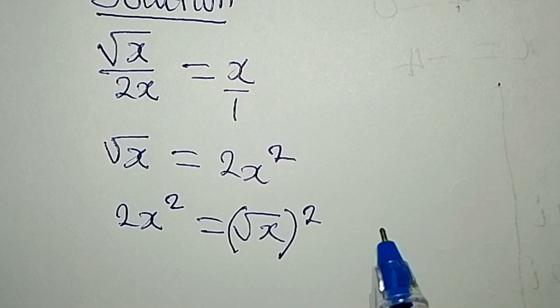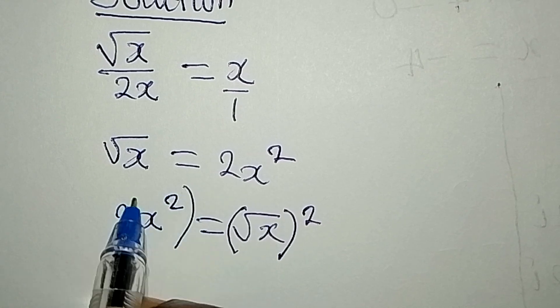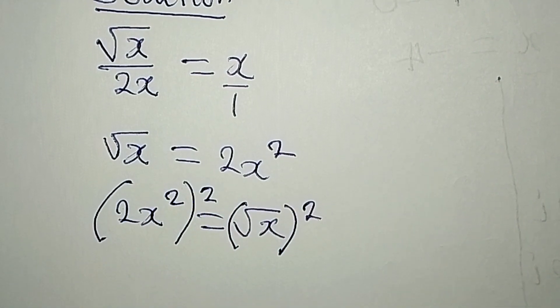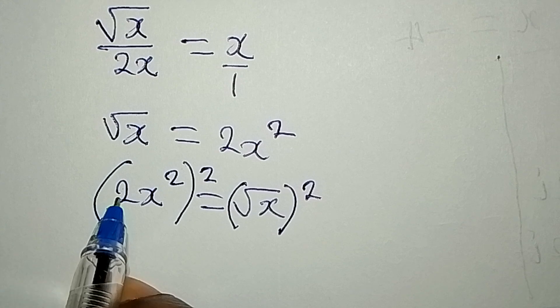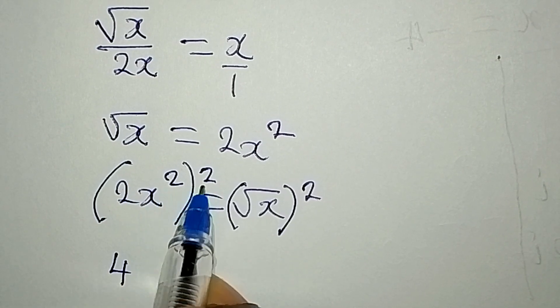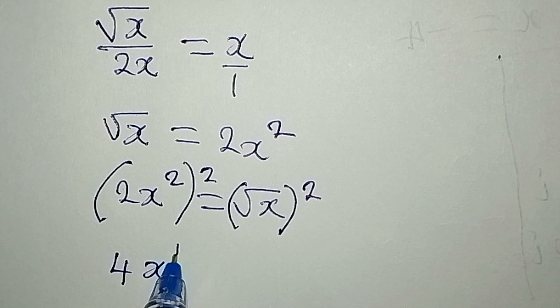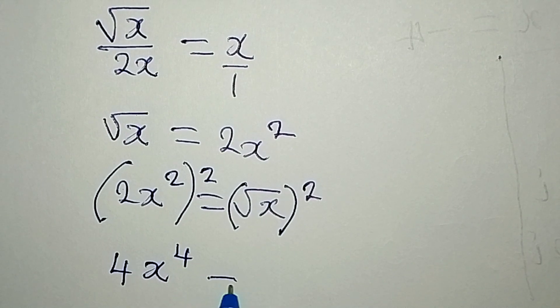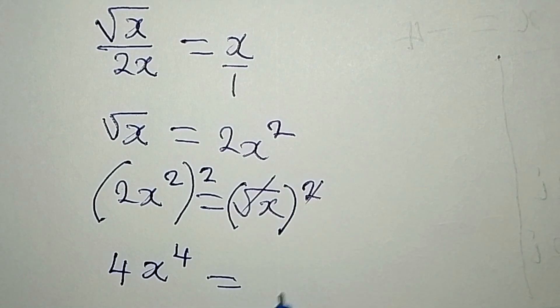That means I would also square what I have on the left hand side, so that 2 to the power of 2 will give us 4, x squared to the power of 2 will give us x to the power of 4, and this will be equal to x.